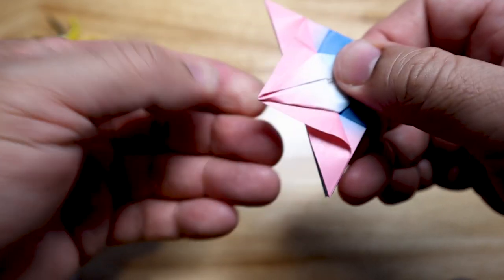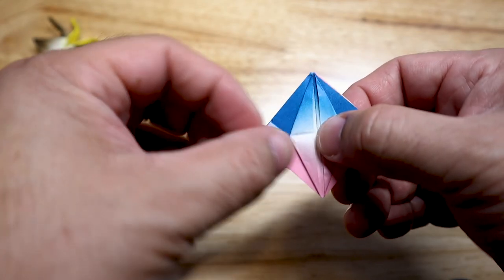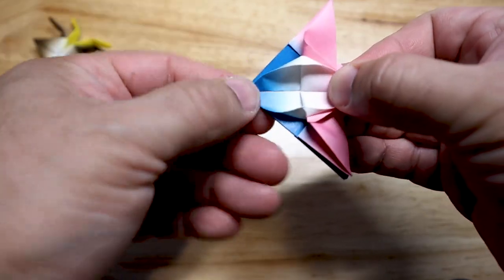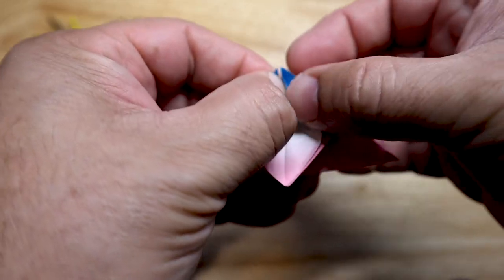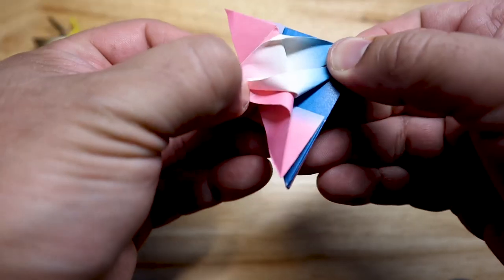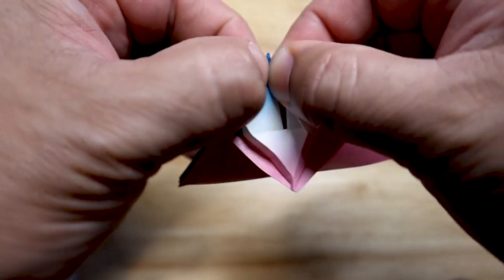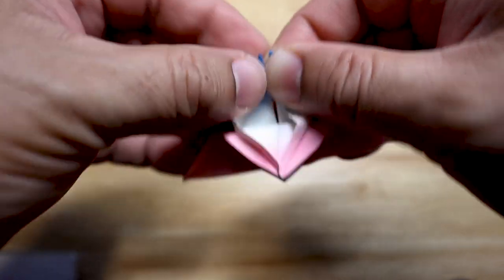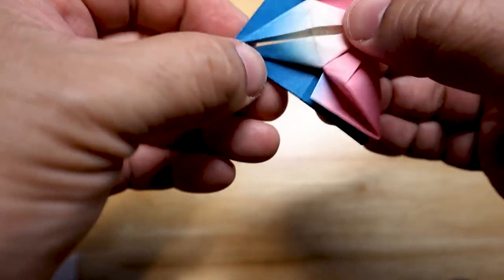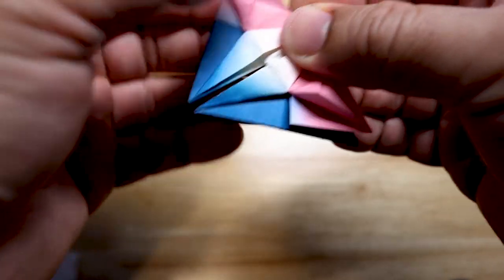There we go. And this is what your shape should look like. Nice and flat. Now we repeat the same step on the other side. And once again, this side did not turn out as nice as I would have liked it to. It's a little bit sloppy, but sometimes that's okay.